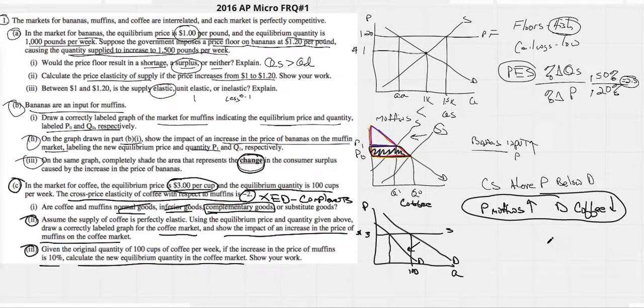They did give us our XED number, which was a negative 2. This is our XED coefficient. We know that our formula for XED is a percentage change in quantity demand over a percentage change in price. We do know this is supposed to be good A and good B. Easy enough. They give us the percentage change in price of muffins. So, we can put that in there.